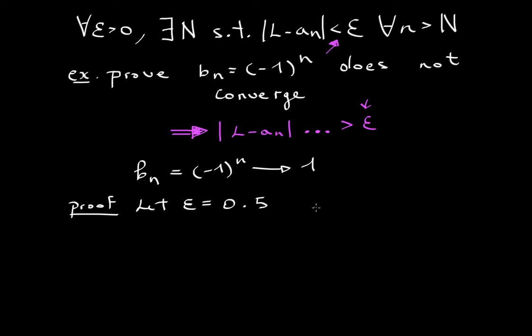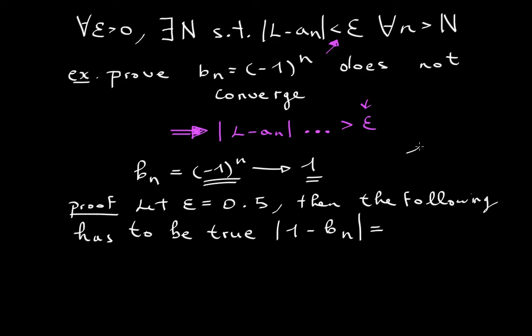Then any n should obey this. The following has to be true. I said people think that it converges to one, so let's put that in for our limit: 1 minus our sequence. If we substitute, we know that the two possibilities for this sequence are either one or negative one. Let's just use one for this. So 1 minus 1 equals 0, which is less than epsilon. Which is good.